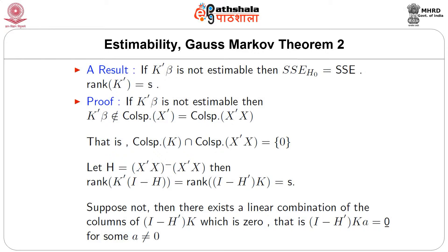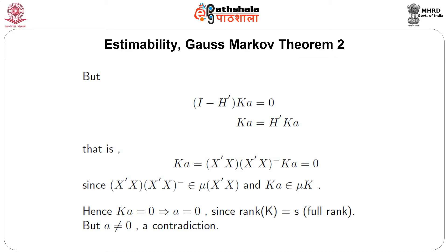Suppose not; then there exists a linear combination of the columns of (I minus H)-transpose k which is zero, that is (I minus H)-transpose k a equals zero for some a not equal to zero. But then k a equals H-transpose k a, that is k a equals (X-transpose X)(X-transpose X) g-inverse k a, which equals zero. Since (X-transpose X)(X-transpose X) g-inverse belongs to the column space of X-transpose X and k a belongs to the column space of k, k a equals zero, implying a equals zero since rank of k equals f (full rank). But a is not equal to zero, so we get a contradiction.